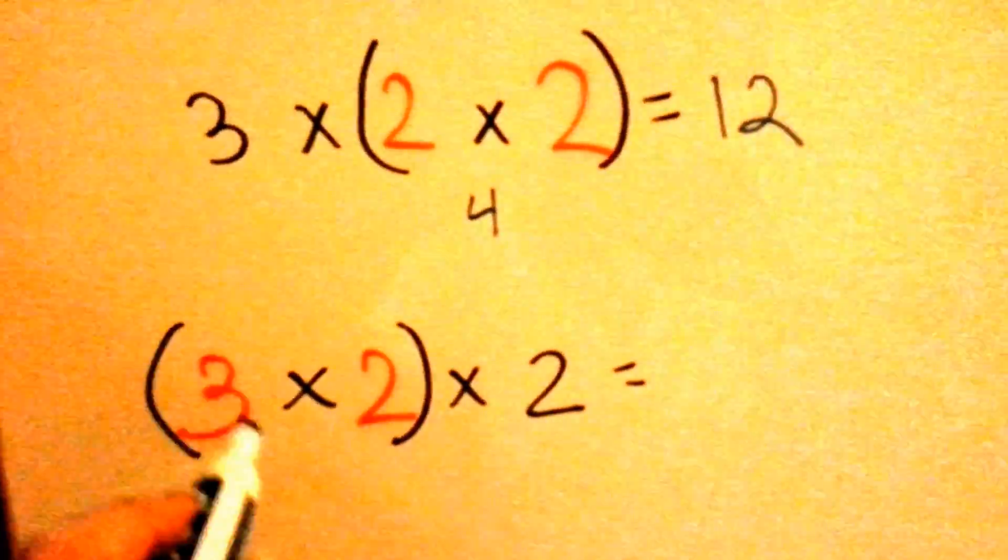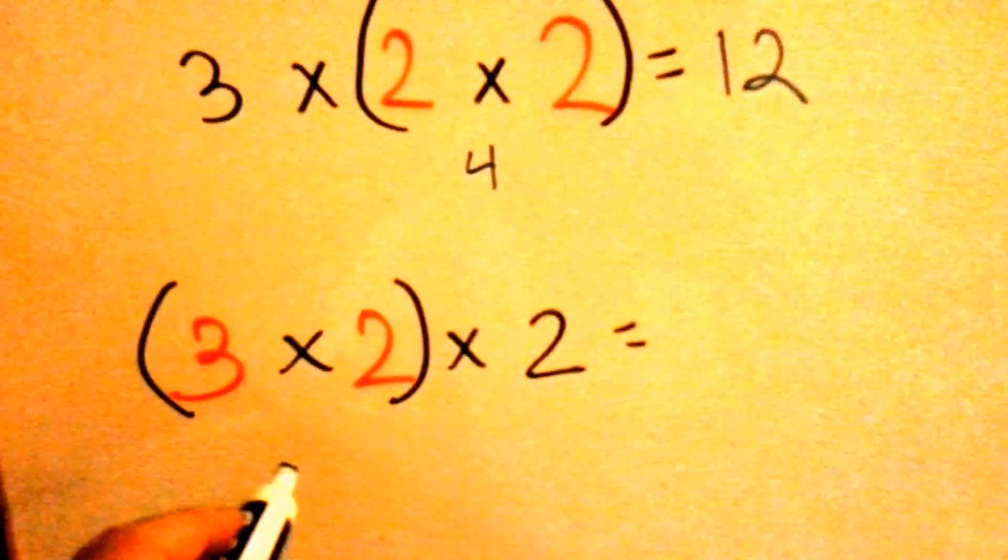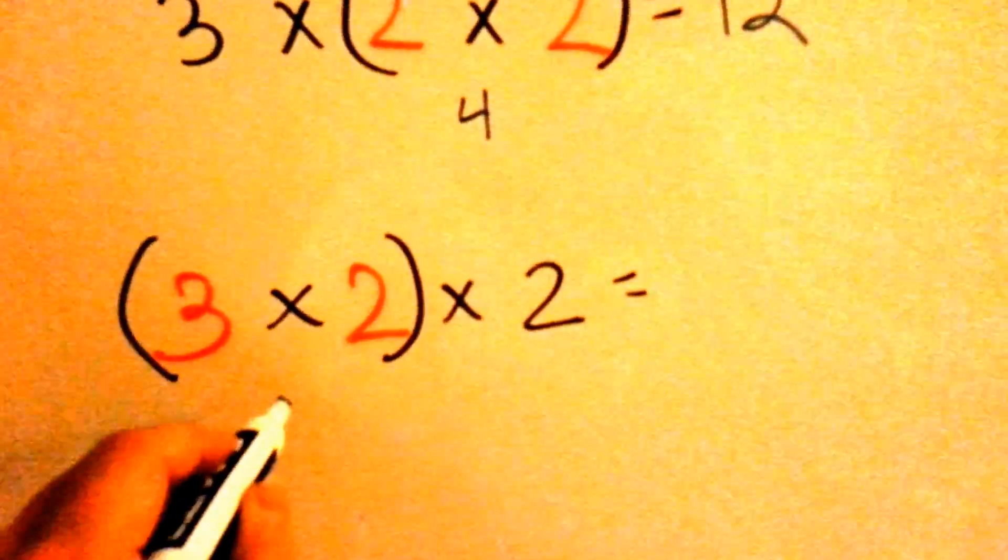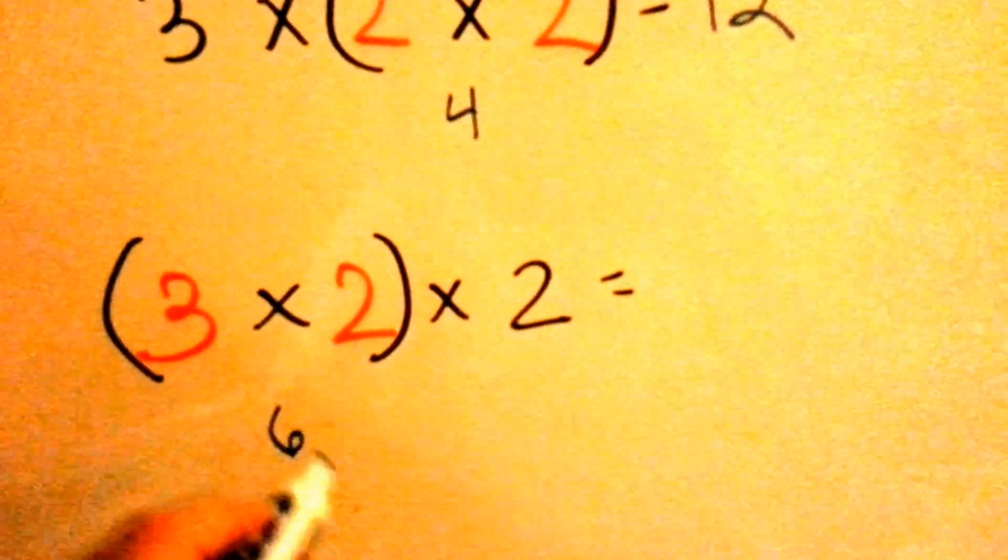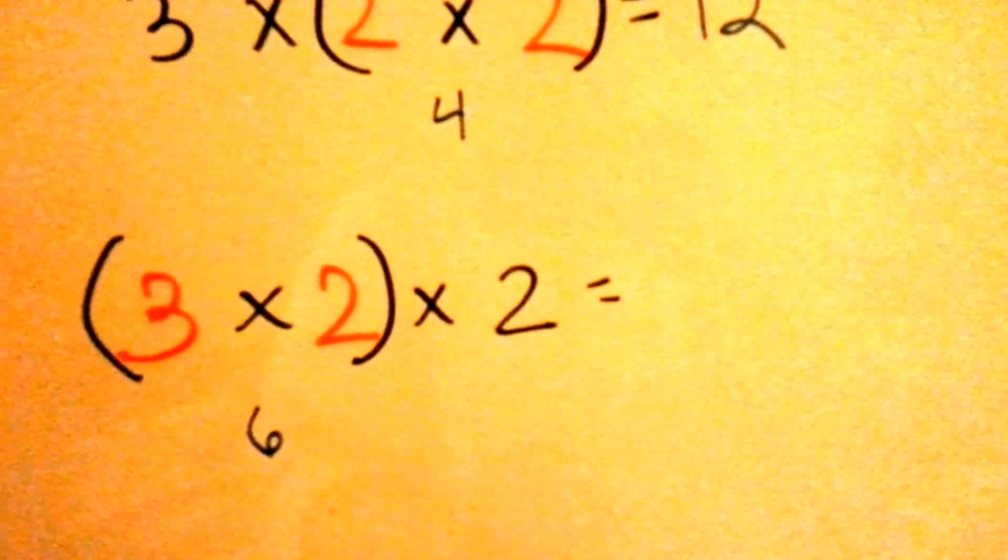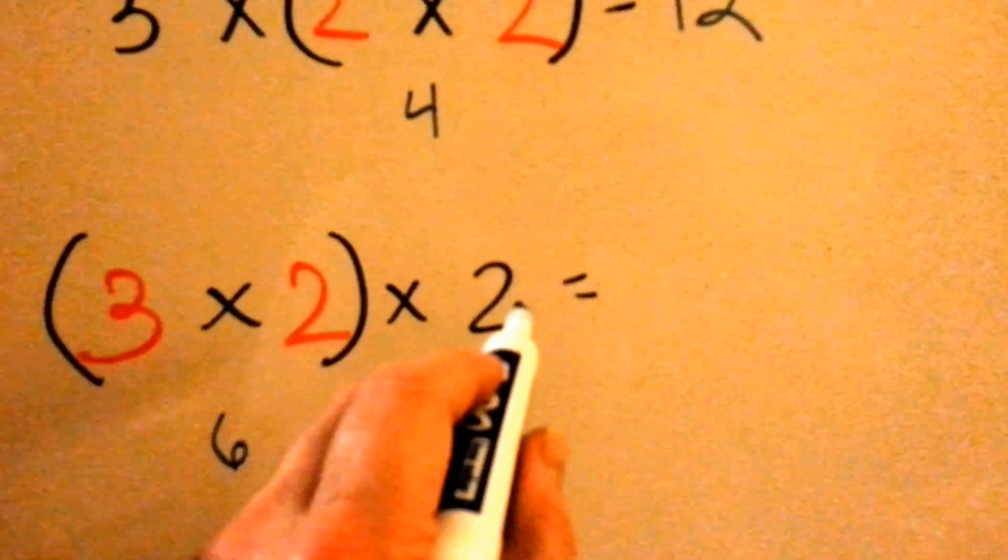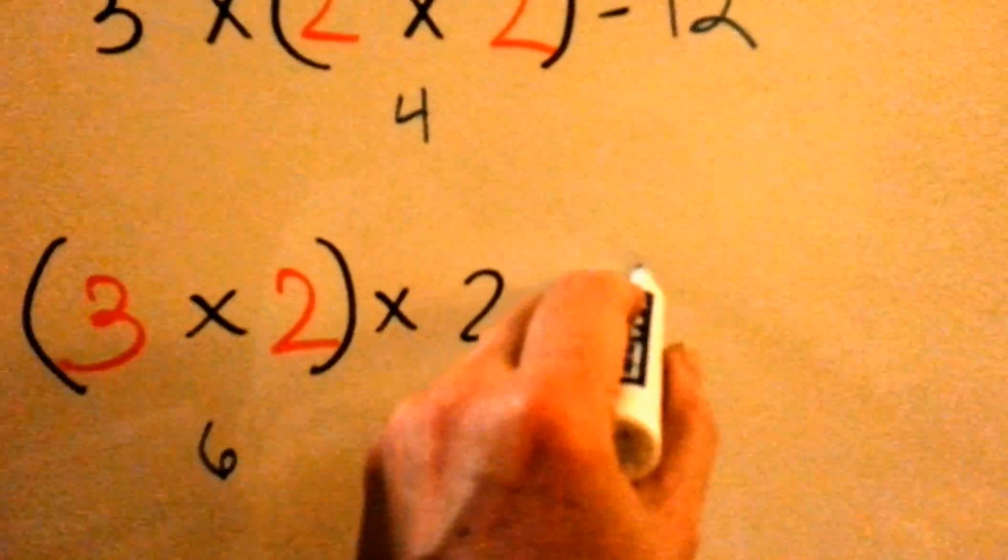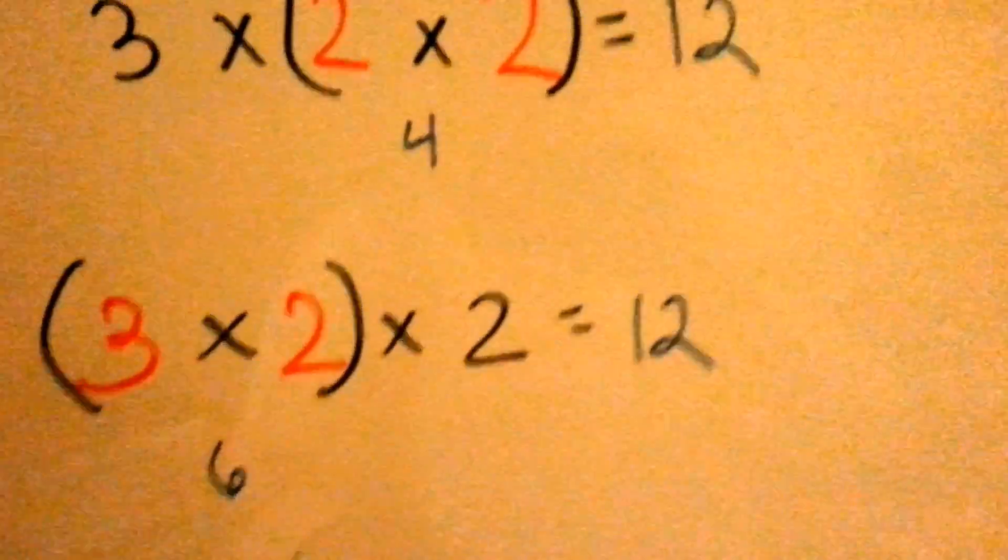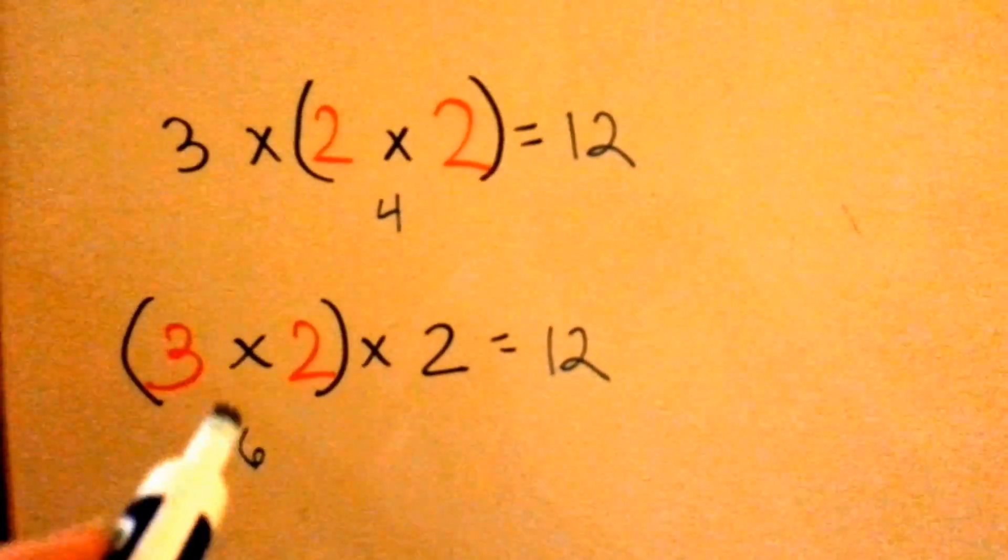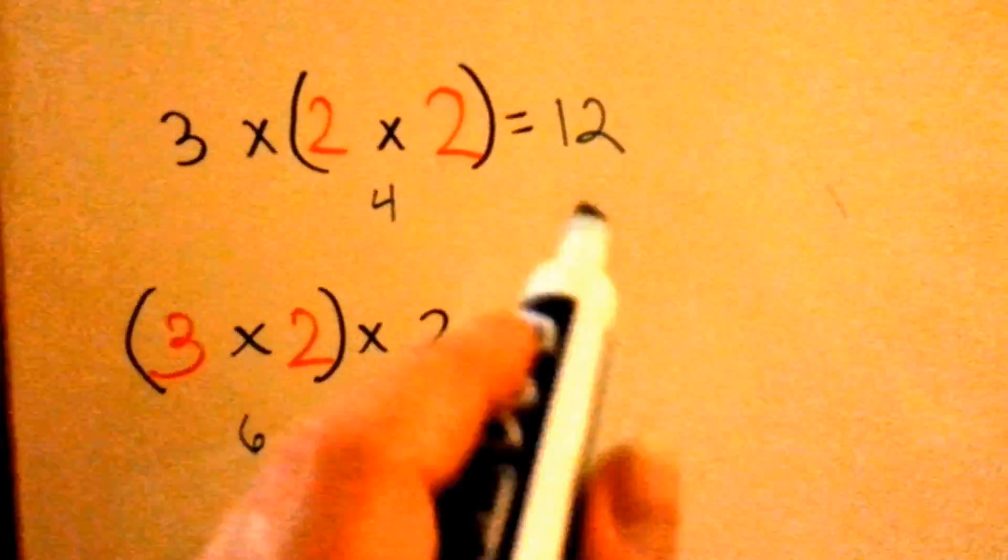Let's do it this way. Three times two is, do you know what three times two is? It is six. Six times two is twelve. See? It didn't matter which ones we multiplied first in the associative property. The answer is going to be the same.